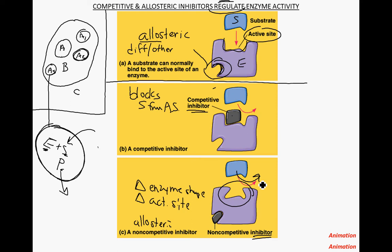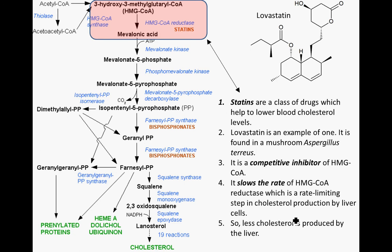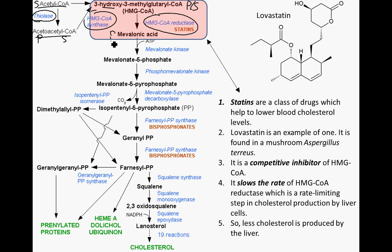This is where we left off. I'll put two animations on Blackboard if you want to look at them. As an example of competitive inhibition — this slide is very complex, but starting in the upper left: acetyl coenzyme A is a substrate, the enzyme in blue makes acetoacetyl coenzyme A as a product. That product becomes a substrate for another enzyme, which makes another product, and this pattern continues all the way through — a highly ordered series of reactions.